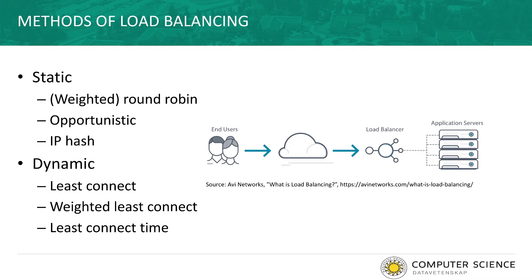Using round robin, the load balancer goes down the list of servers sequentially, passing a web request to each one in turn. When the end of the list is reached, it restarts from the beginning. Although straightforward and easy to implement, it does not account for the fact that servers may have different capacities. Weighted round robin addresses this by assigning a weight to each server based on its capacity. In opportunistic load balancing, incoming web requests are dispatched in random order to keep each server busy, without consideration of current workload, which can create bottlenecks even when some servers are lightly loaded.